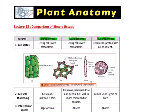Welcome to Studio Biology. In this video on plant anatomy, I am going to discuss the comparison between the simple tissues: parenchyma, collenchyma, and sclerenchyma. Cell status: parenchyma cells are living, collenchyma cells are living with protoplasm, but sclerenchyma cells are dead cells and protoplasm is either nil or absent.